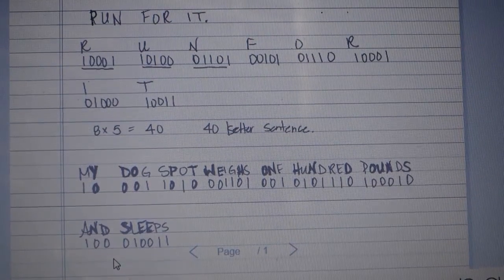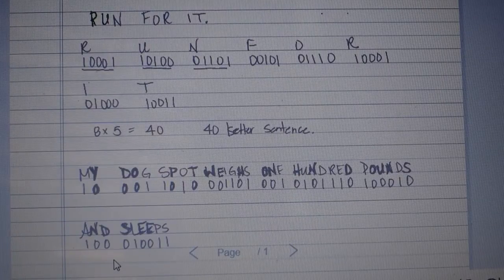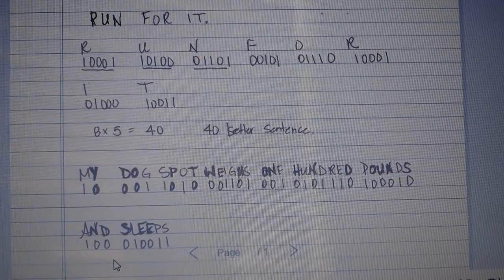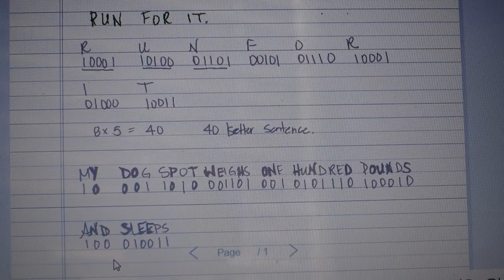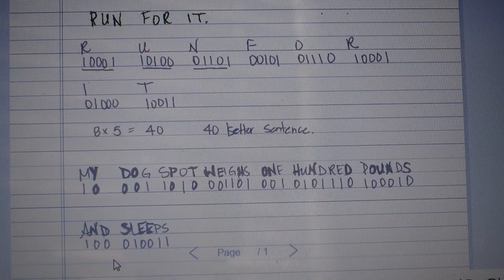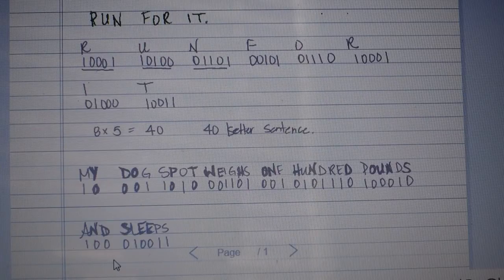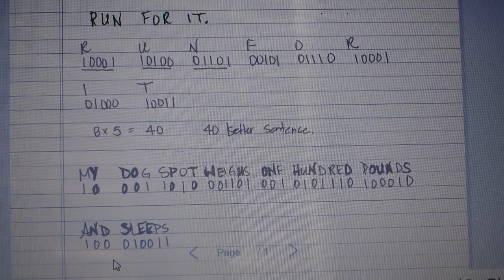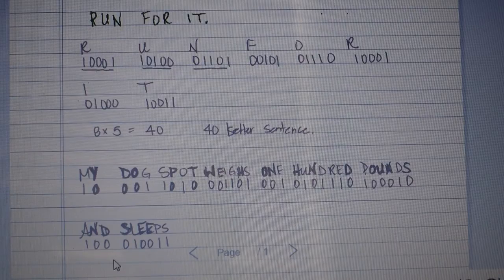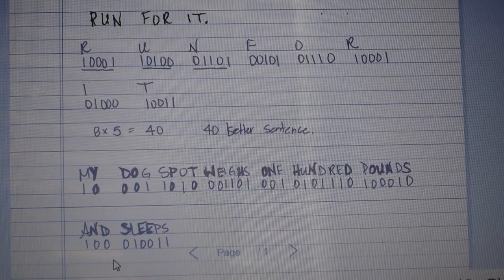But what we're going to do today is Bacon's Code. I'll first start by writing out what I want to decode. Okay, so "run for it" has three, six, seven, eight letters in it. A is in position zero and Z is in position 25.